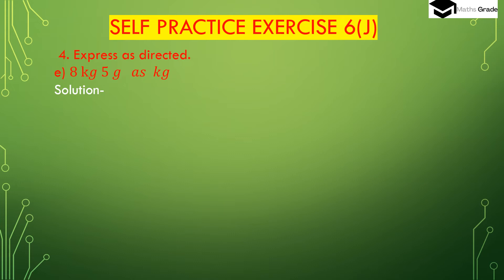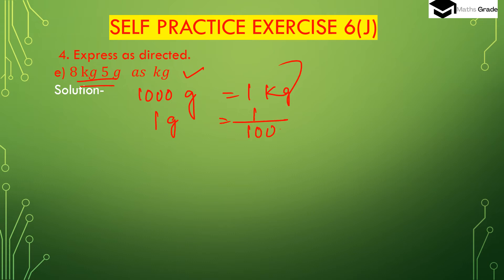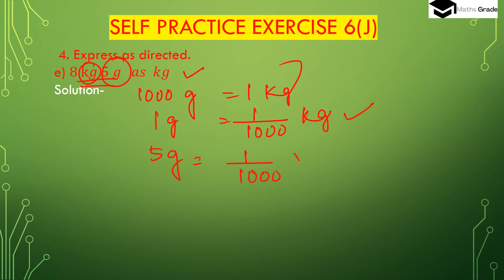Now part E: 8 kg 5 grams to kg. We have to convert 8 kg 5 grams to kg. We know 1000 grams is 1 kg, so 1 gram will be 1 divided by 1000 kg. The 8 kg is already in kg units, so no conversion needed. We only convert 5 grams to kg: 5 multiplied by 1 divided by 1000 gives 5 divided by 1000 kg.